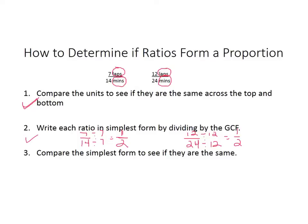Now step 3, compare the simplest form to see if they are the same. Well, when we reduced 7 over 14, we have 1 half. When we reduced 12 over 24, we got 1 half. So we did determine that 7 laps for every 14 minutes and 12 laps every 24 minutes do form a proportion. They do have an equal ratio.